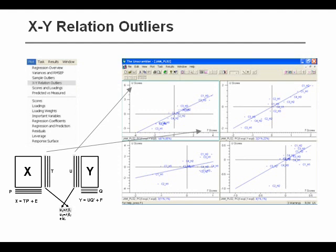But what you can see here is, for example, is there a linear relation approximately between our T and U scores? It doesn't have to be perfectly linear, but you have to have some sort of significant correlation.